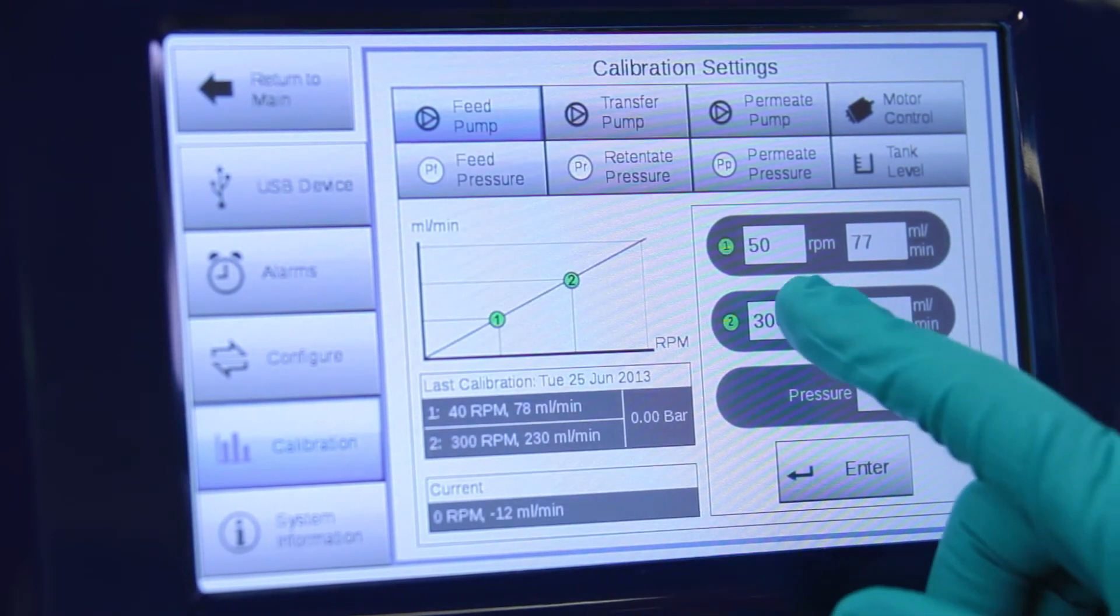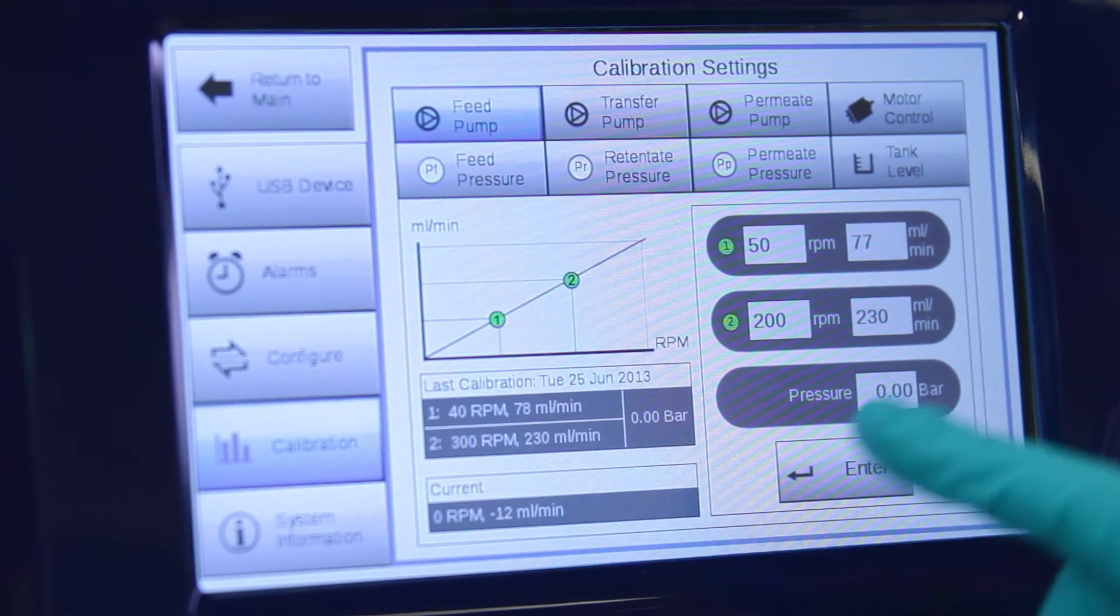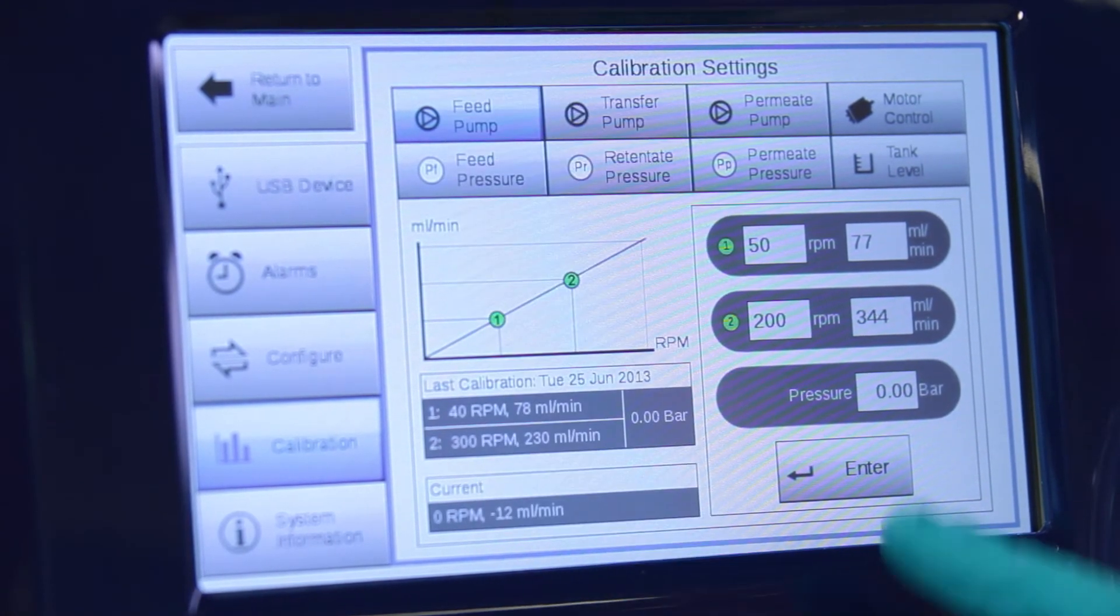The pressure used during calibration can be entered as a reminder. The transfer and permeate pumps are calibrated in the same way as the feed pump.